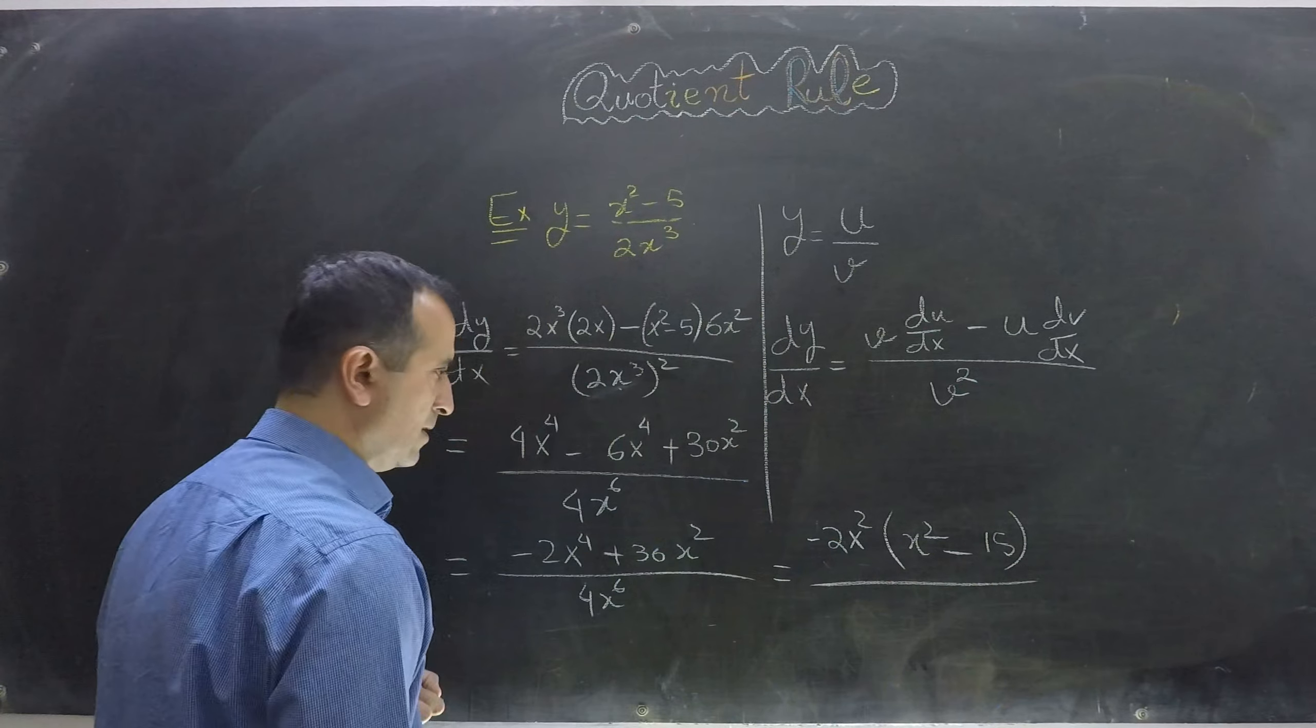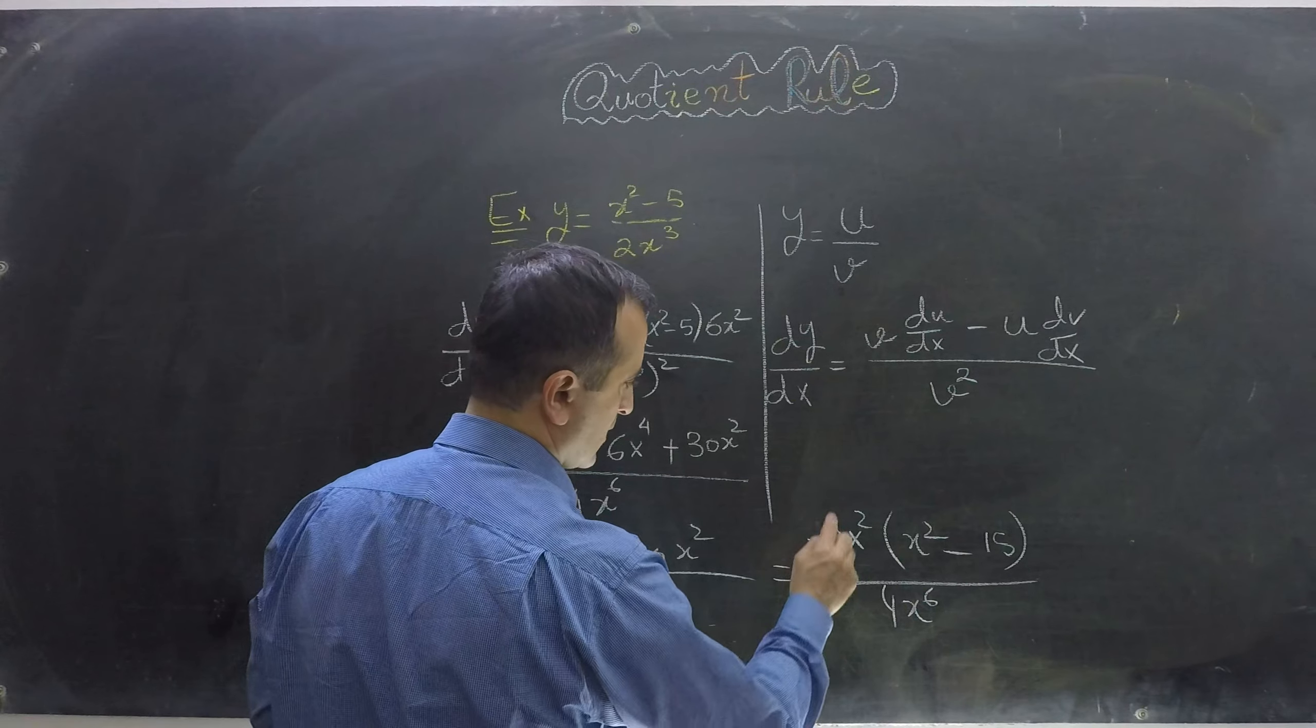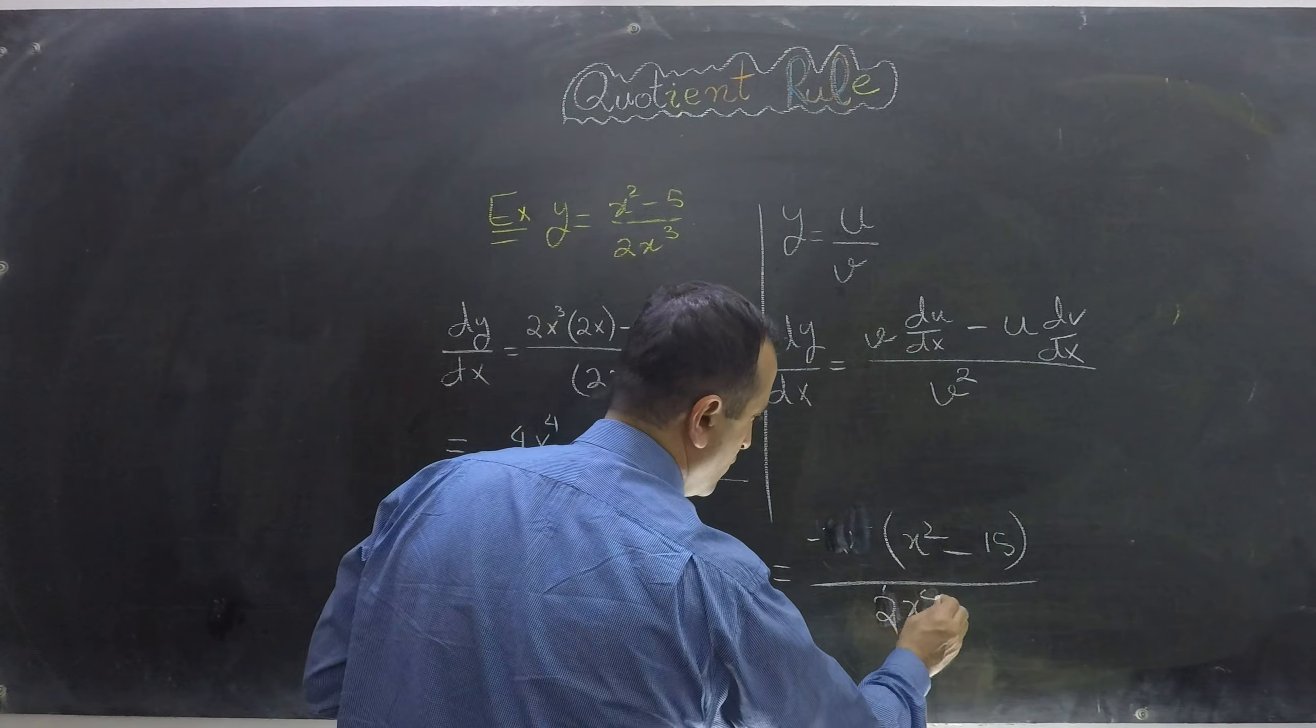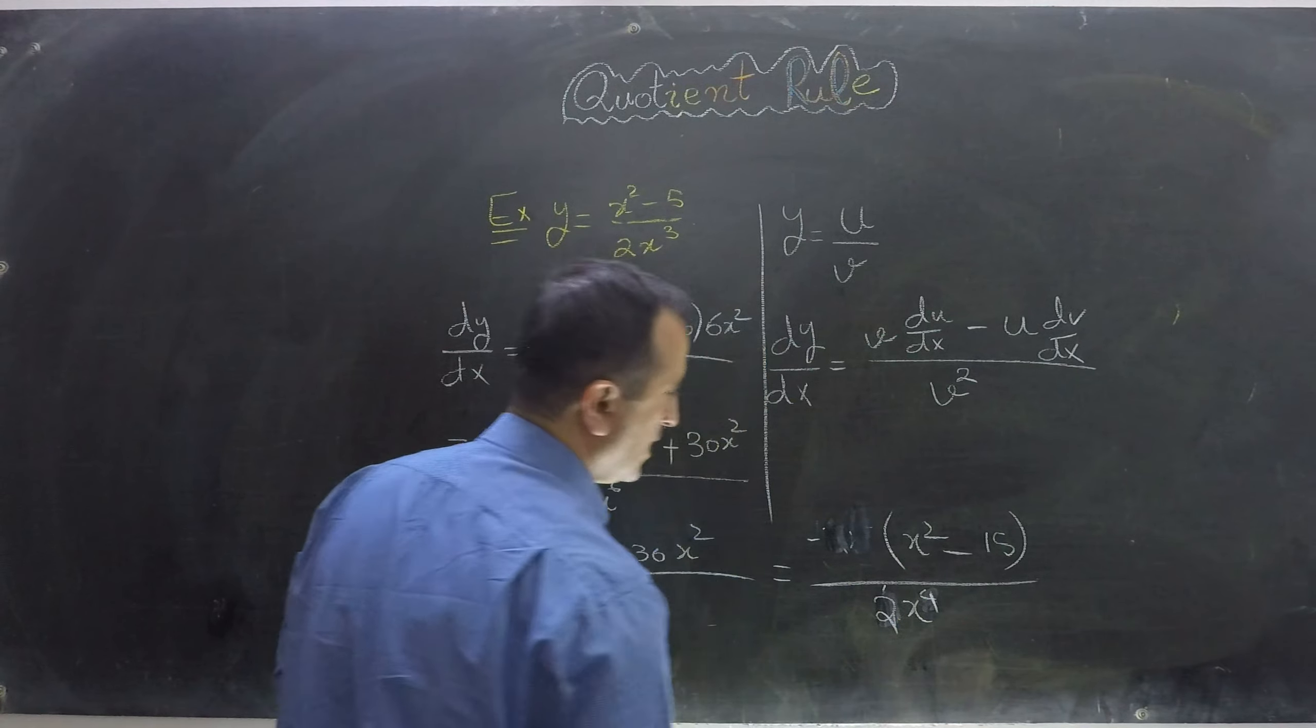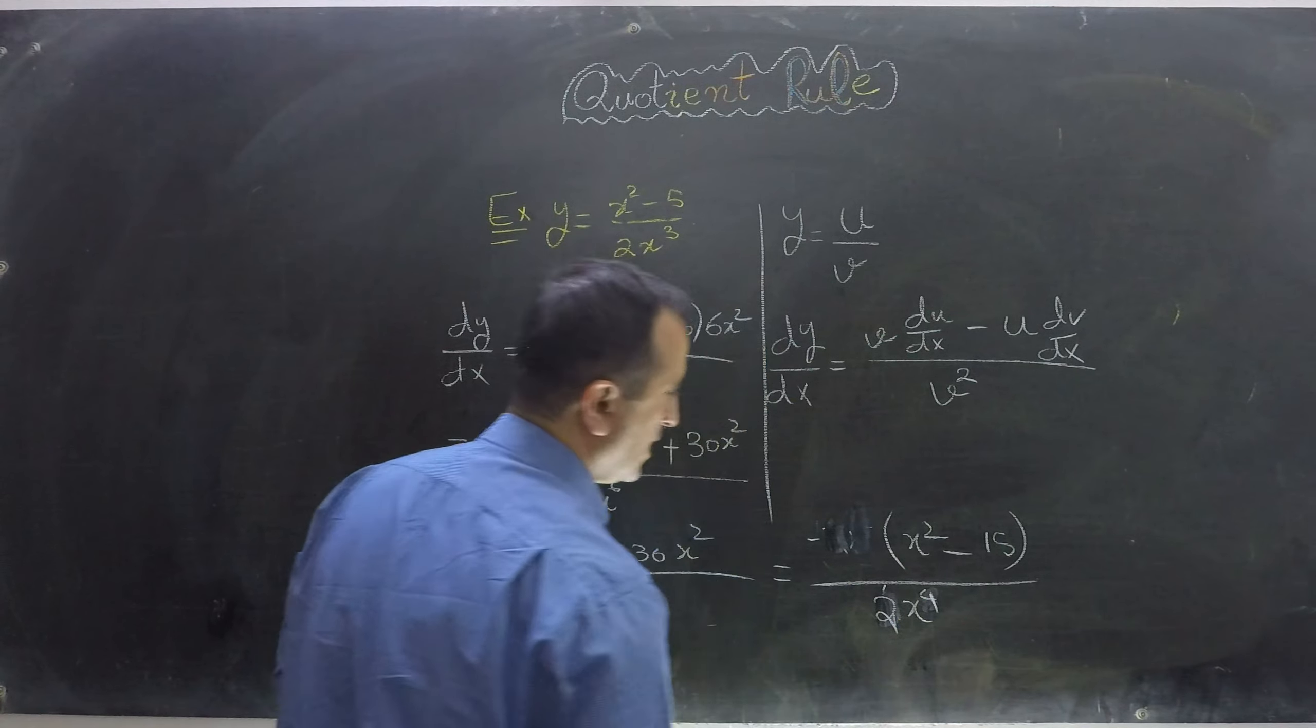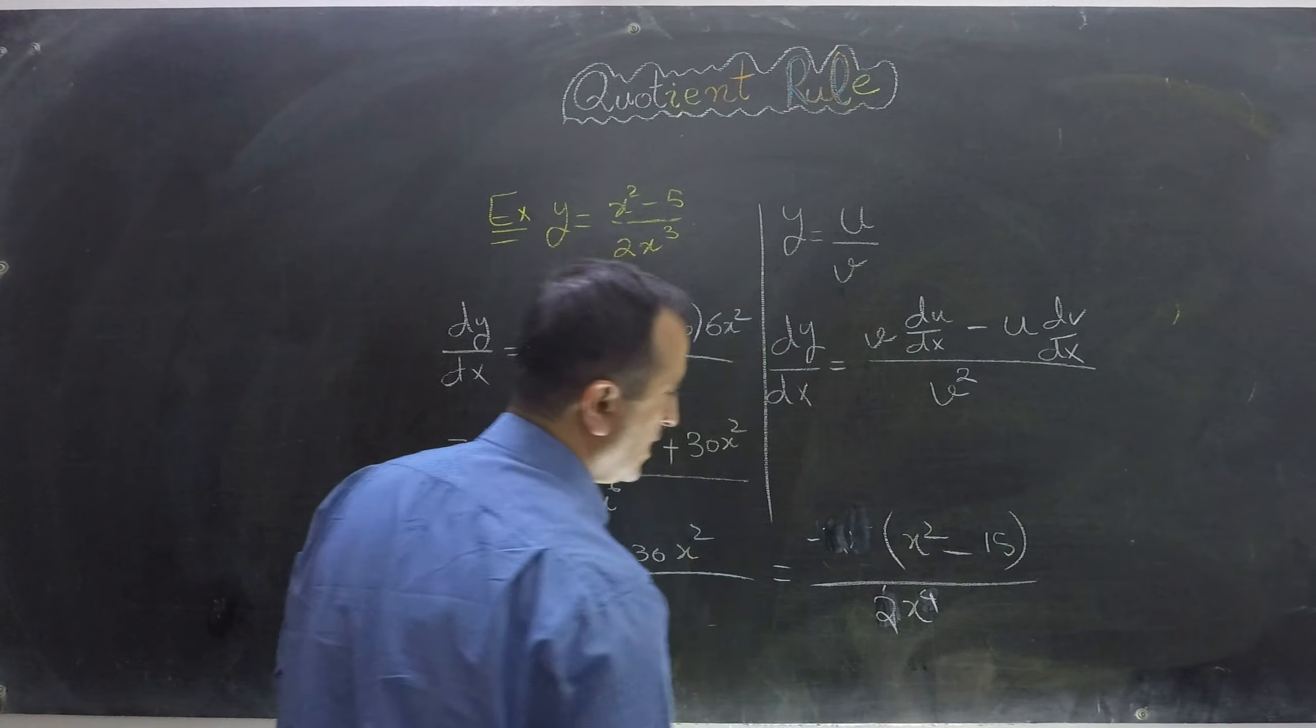I take my common factor out, so my common could be minus 2x squared, and I will be left here with x squared minus 15. This becomes minus 2x squared over 4x raised to power 6. I cancel my terms, so here I will have 2 and this will go, and here I will have 4, and that will be my final answer.